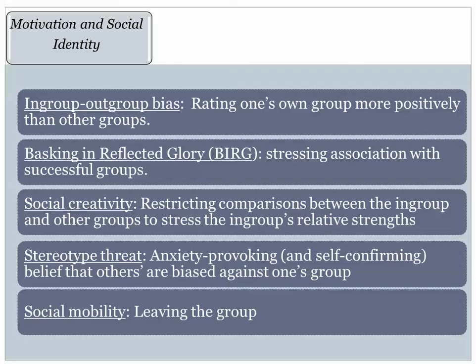Probably the most significant process explored by social identity theorists is in-group/out-group bias. The idea is that in order to maintain your self-esteem you have to positively appraise your group. You want to feel like you're the best member of your group and that your group is better than other groups, and that leads to in-group/out-group bias. Going back to the original Tajfel minimal intergroup situation, right away you see the tendency to engage in this — members of group A believed they were better than members of group B and vice versa, even though the distinction was completely arbitrary.